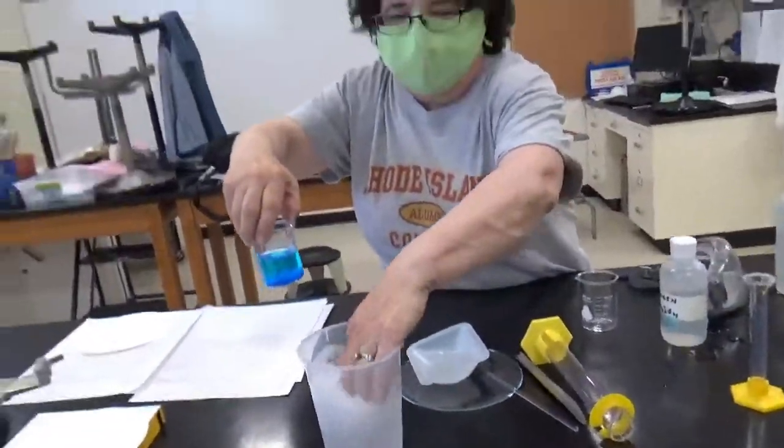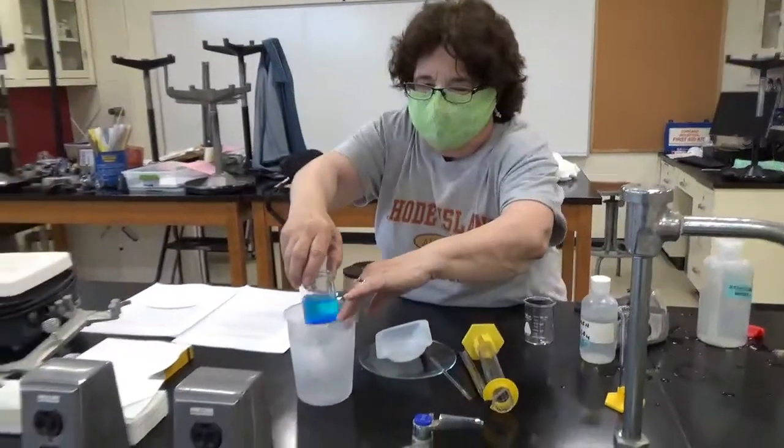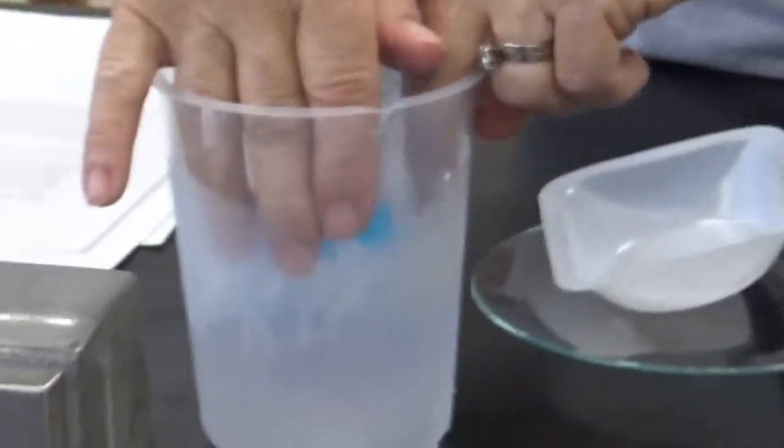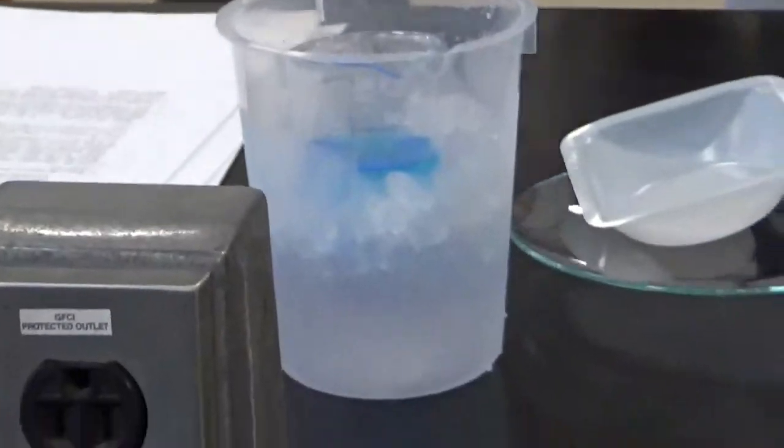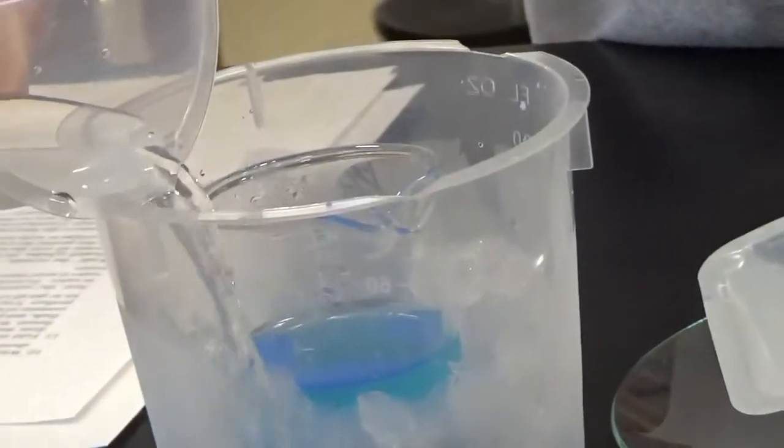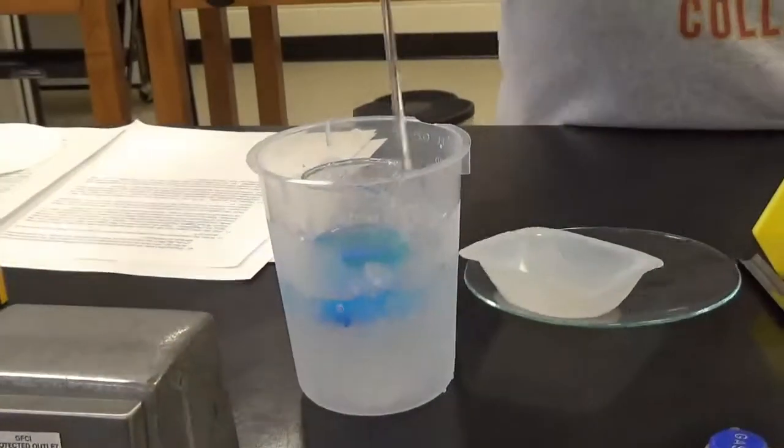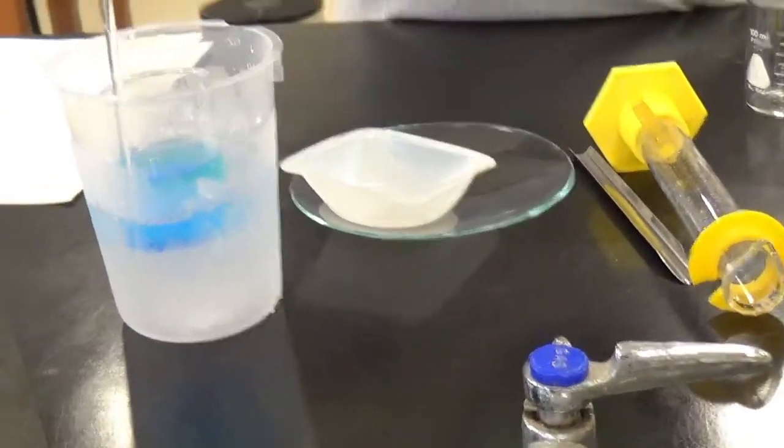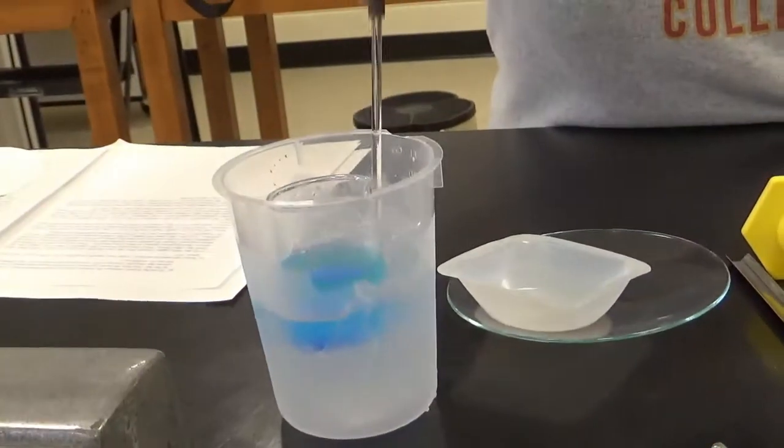We make an ice bath by putting some ice around the beaker and let it sit fairly undisturbed. You can put a little water in there too, but don't put water in the beaker. Now let's see if we notice any changes after a little bit.